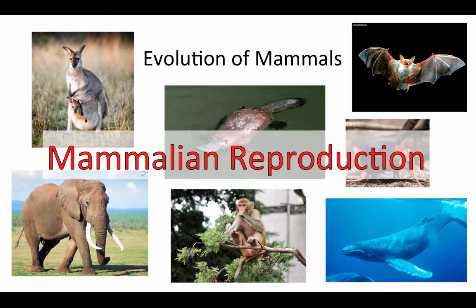In this web lecture, we're going to start to think about the three extant lineages of mammals. These include the monotremes, which include the platypus and also the spiny echidna — these egg-laying mammals native to Australia and New Zealand.